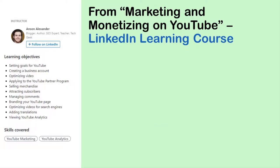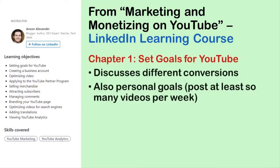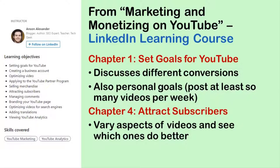That actually is an issue that Anson covers, somewhat fleetingly in the course. In chapter one he discusses the different conversions I mentioned, but he discusses them under goals — and these goals can also be personal goals, like post so many videos per week. Then in chapter four he gets to the issue of how do you figure out what works. He recommends varying videos to attract subscribers and seeing what works. For example, I have a lot of videos demonstrating how to use R and SAS — basically programming demonstrations. Those videos are pretty short. But I also have videos that are essentially lectures on topics, such as how to do healthcare quality projects — those are long form. By doing these different types of videos, I can gauge who my audience really is and what they really like.